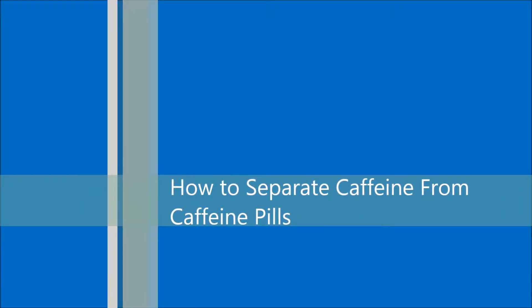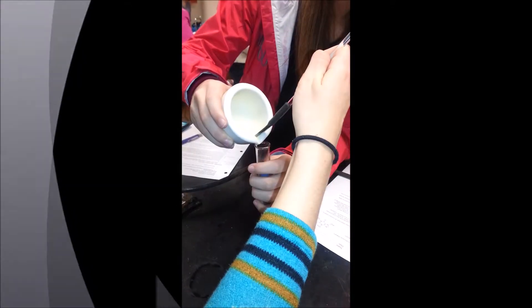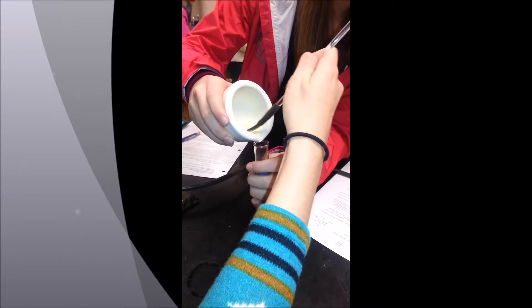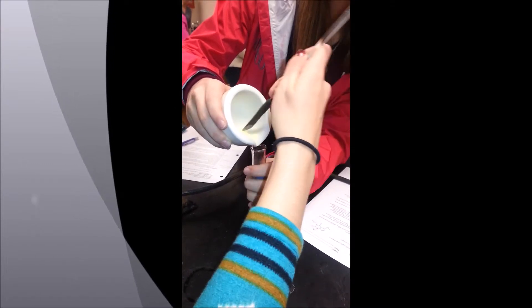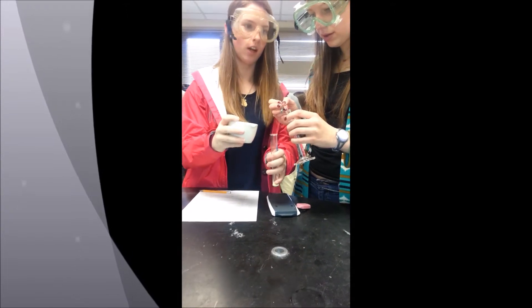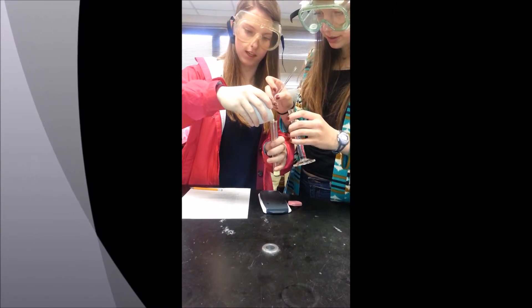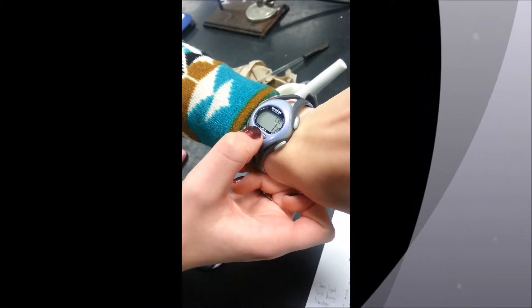How to separate caffeine from caffeine pills: Use a mortar and pestle to grind the caffeine pills into a fine powder. Using a rubber policeman, transfer your powder into a test tube, adding 10 milliliters of water.